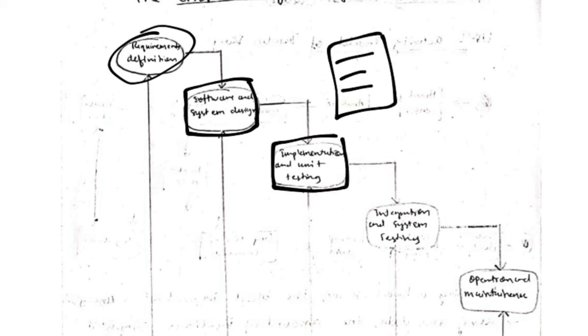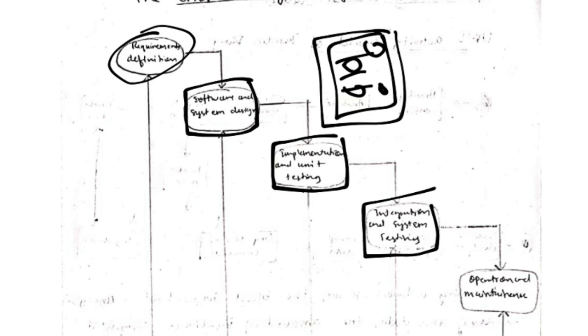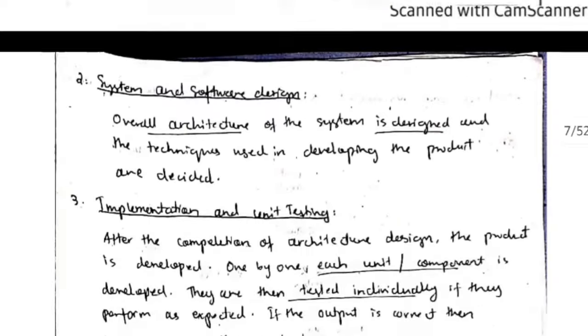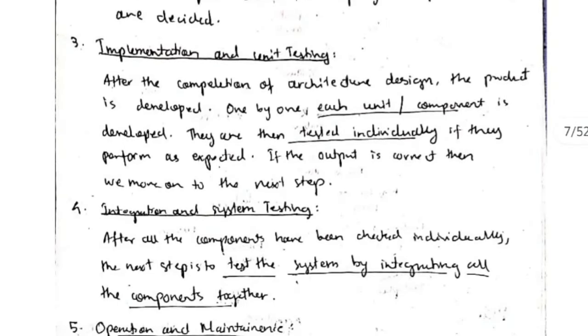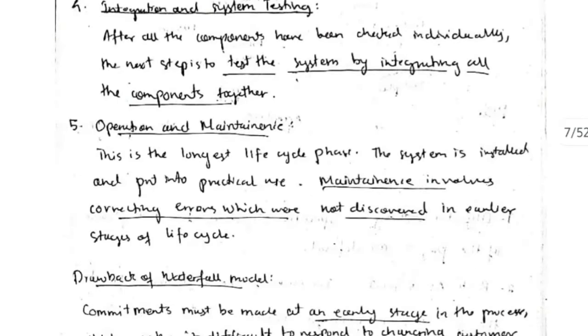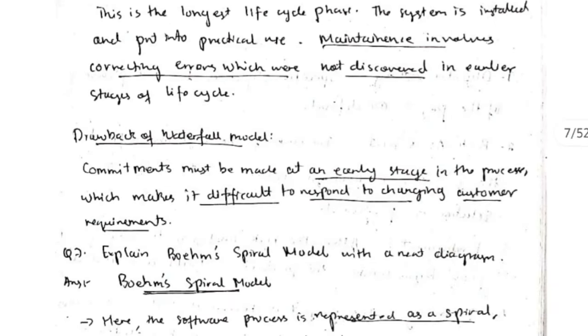Next is unit testing — each component is tested separately. After that, the complete system is tested in system testing. Then the product is delivered to the customer, and operation and maintenance is performed — after delivering the product, if any error occurs, maintenance is required.